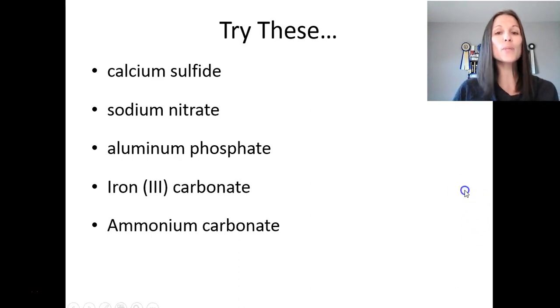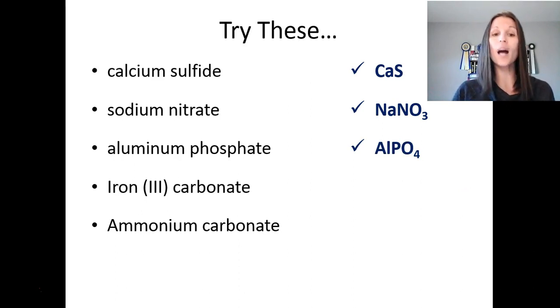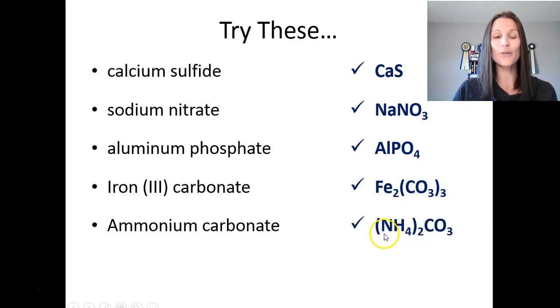How did you do? Calcium sulfide, CaS, sodium nitride, NaNO3, AlPO4 for aluminum phosphate, iron 3-carbonate becomes Fe2(CO3)3, because you need three of the entire carbonate ion, and ammonium carbonate is (NH4)2CO3.